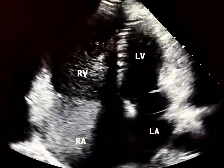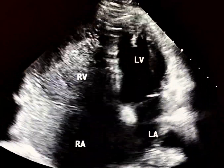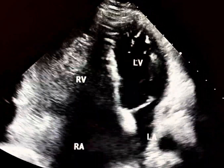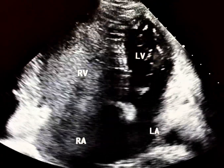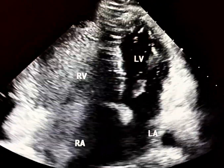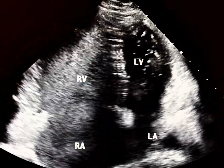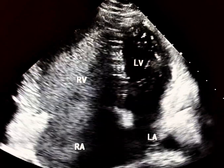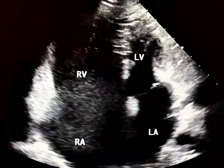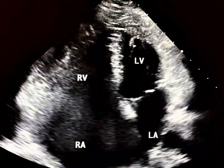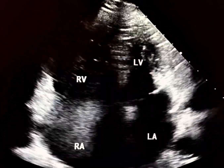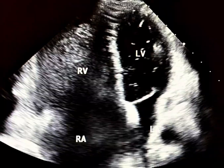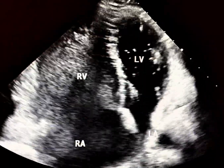A contrast study shows the passage of contrast bubbles from the right heart to the left heart, indicating the presence of a shunt. However, transesophageal echocardiography showed only a small patent foramen ovale.